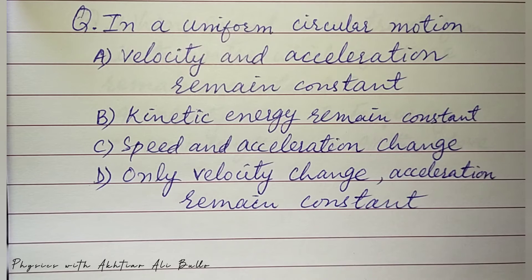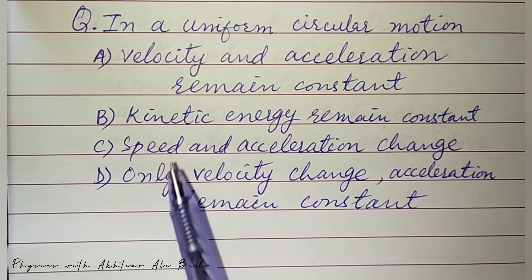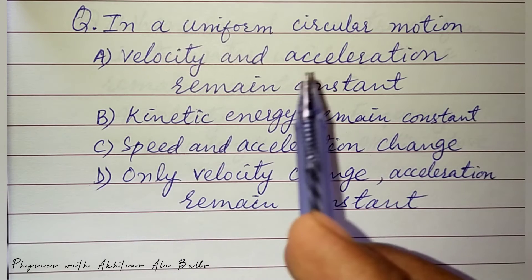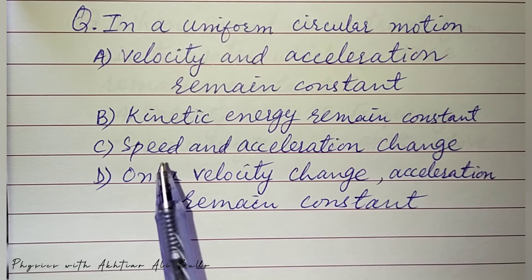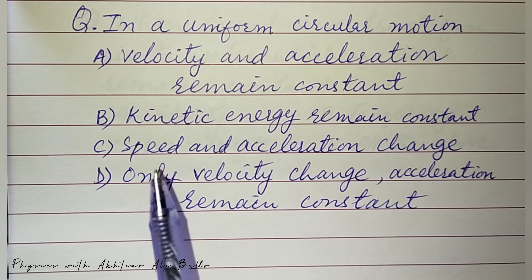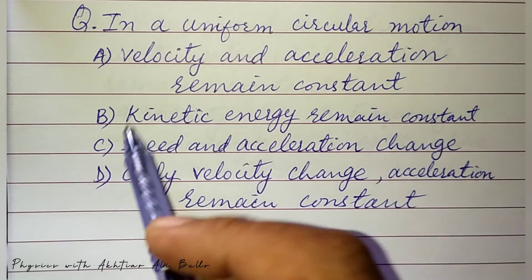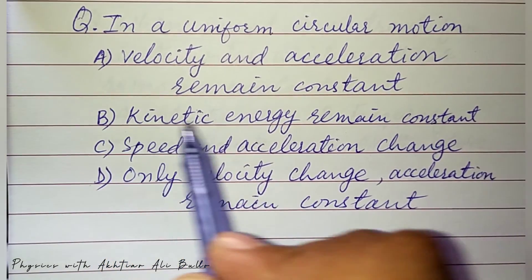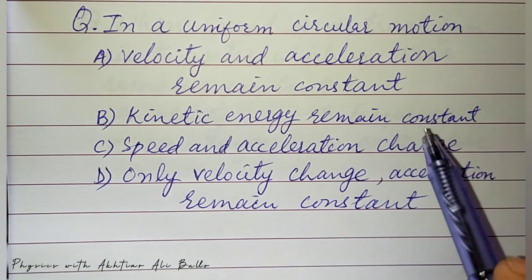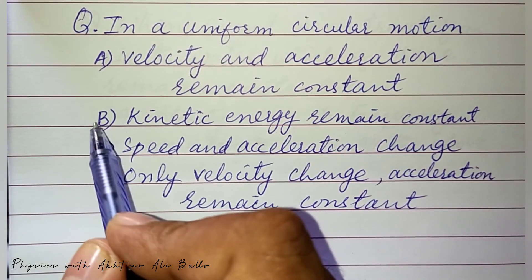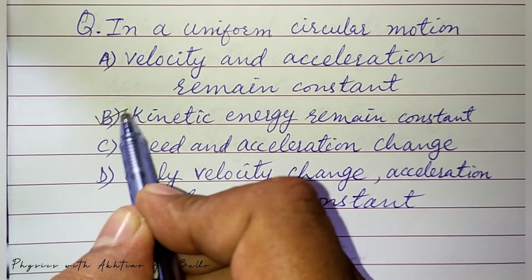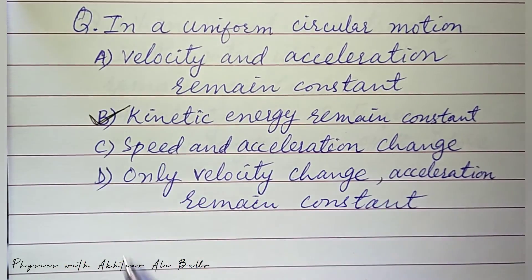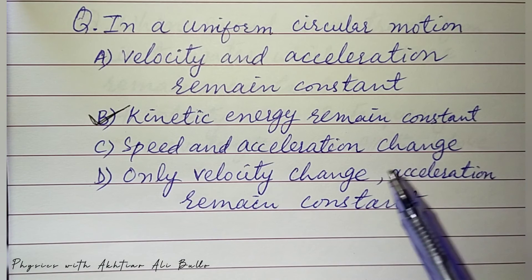As we know that in uniform circular motion, the speed of a body will remain constant, and that's why kinetic energy remains constant. So the correct option will be b) kinetic energy remain constant.